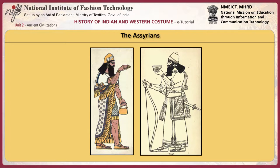King Assur Nasirpal, 9th century BC, is depicted wearing a long tunic tied at his waist and covering the back half of his figure in a small richly decorated shawl about 20 inches square. He also wears a belt. The wavy tassels, which look like horsehair, hang from his sword belt. A tassel also hangs from the back of his necklace and two ribbons from his cap band.